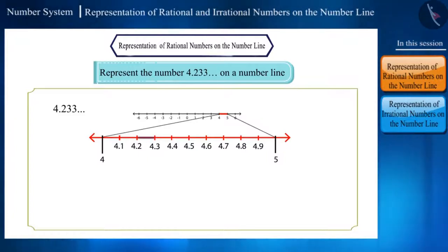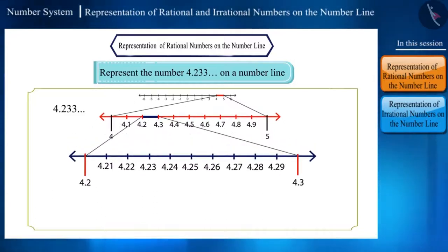Now this number would lie between the numbers 4.2 and 4.3. Friends, are we now able to locate this number accurately on the number line? We have just reached the first place after the decimal and here, in this number 3 is getting repeated. Let's further divide this length into 10 equal parts.